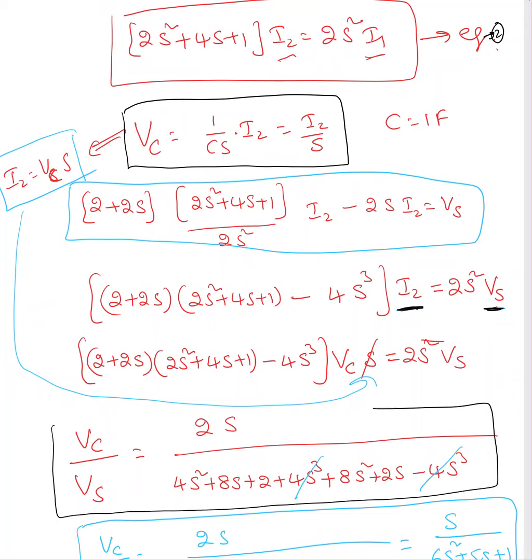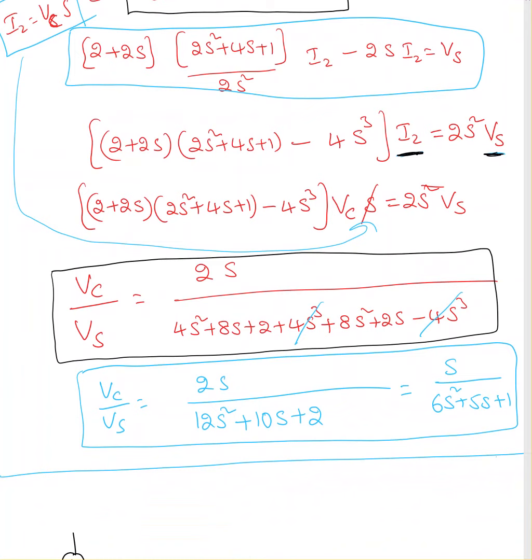I'm not spending too much time solving this. Please go through the solution. Now, VC over Vs equals s over 6s squared plus 5s plus 6. This is the transfer function of the given circuit.